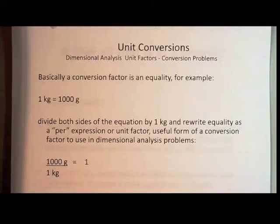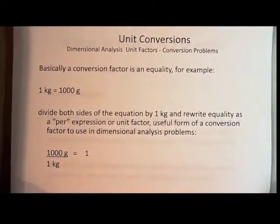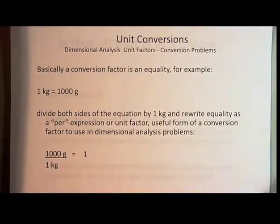Basically a conversion factor is an equality. For example, one kilogram equals 1,000 grams. That's an equality - the left hand side equals the right hand side. One kilogram is the same as 1,000 grams. Now to do unit conversions, a lot of times what we want to do is make what we call a unit factor. Because this is an equality, you can divide the left hand side by the right hand side or vice versa, and your quotient is going to equal one.